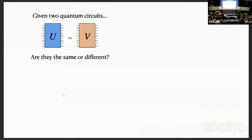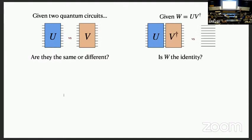We're going to talk about a pretty simple problem. The problem is: I give you two different quantum circuits, and I ask you, are they the same circuit, or are they different? Maybe the gates aren't the same, but I just want to know, are they implementing the same unitary? I could also ask: I give you one circuit, and I ask if it is the identity or not. These are equivalent questions because you can just do U times V-dagger.